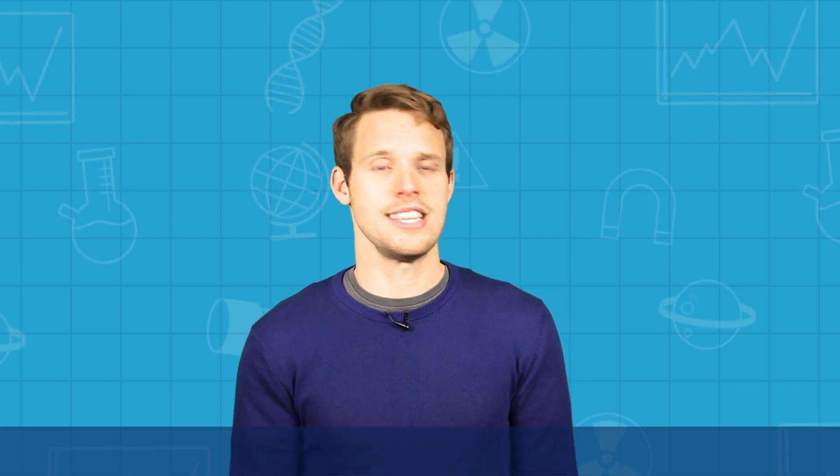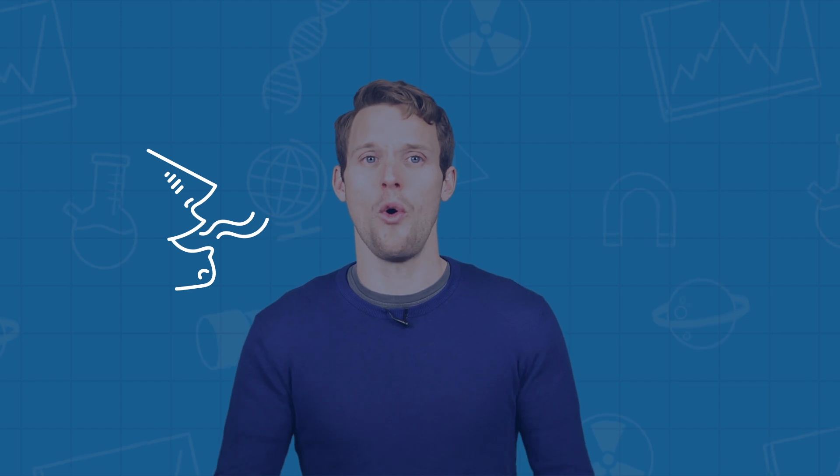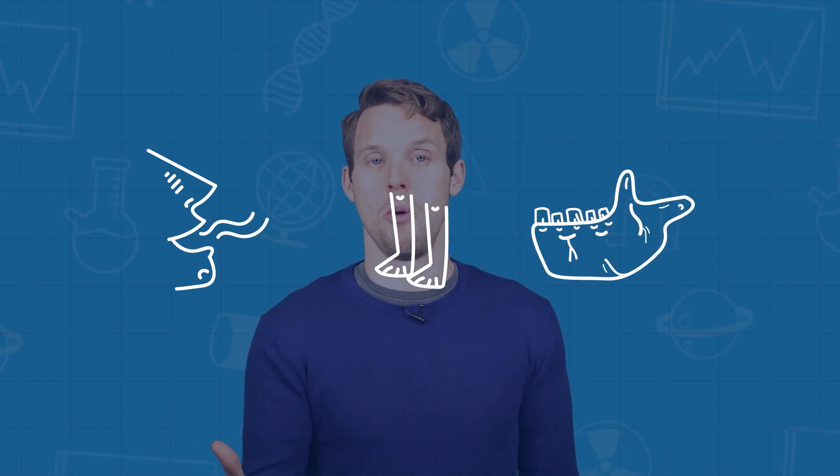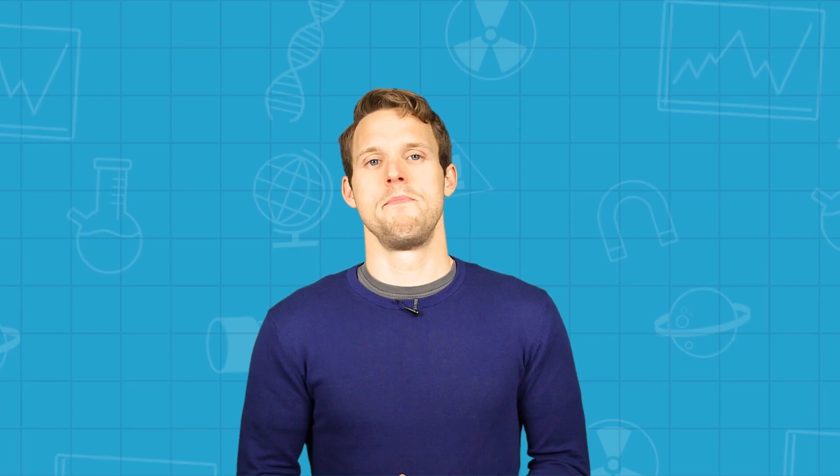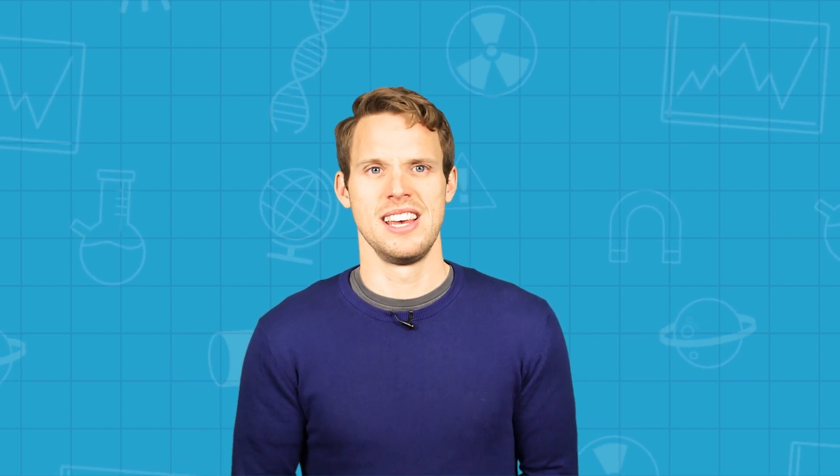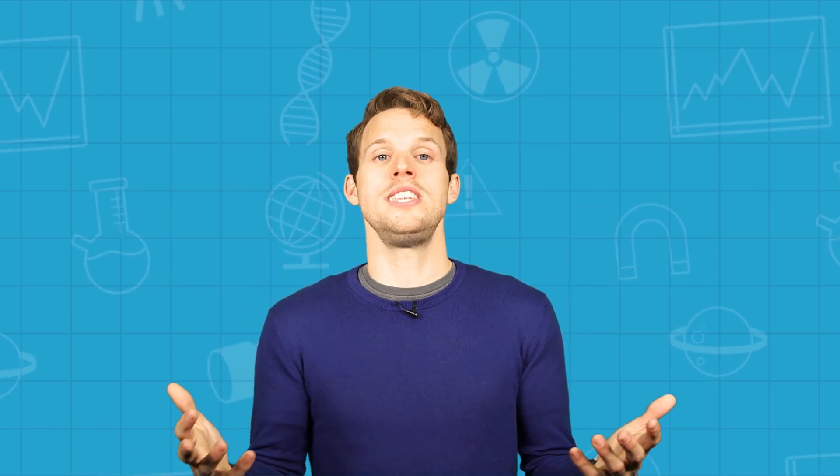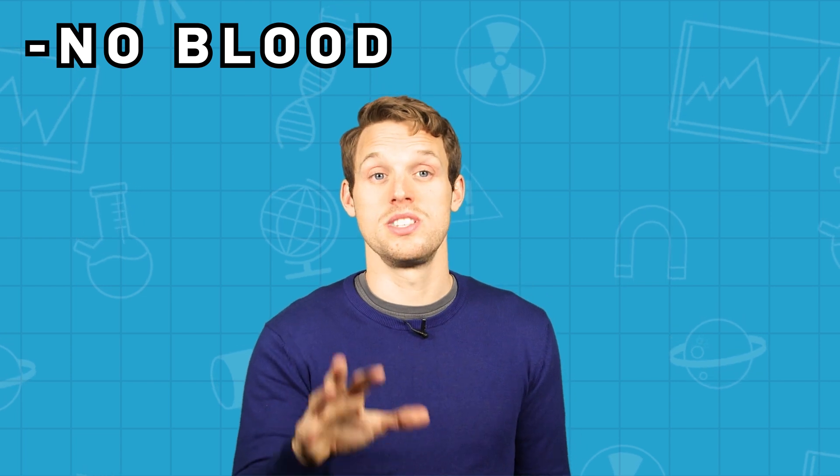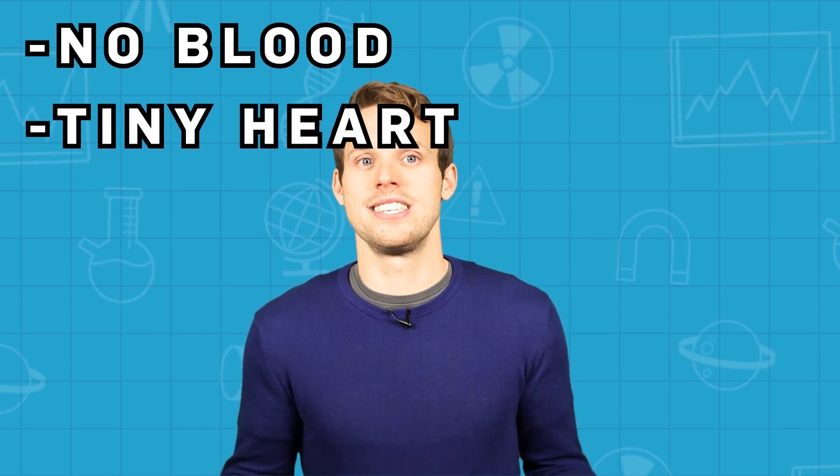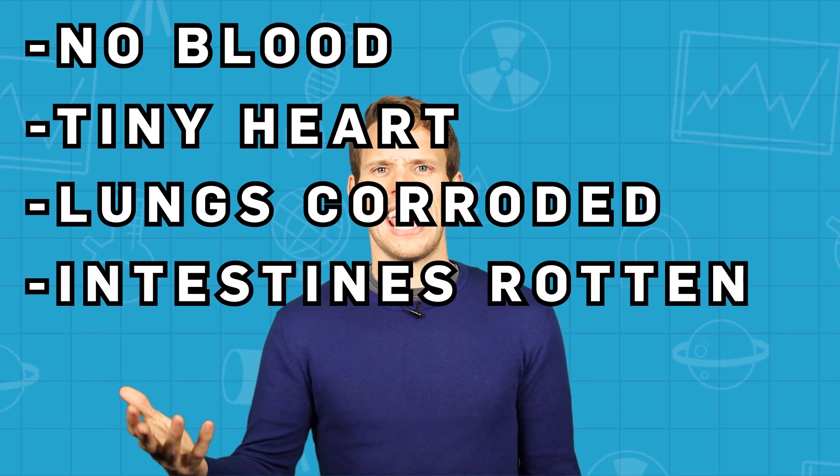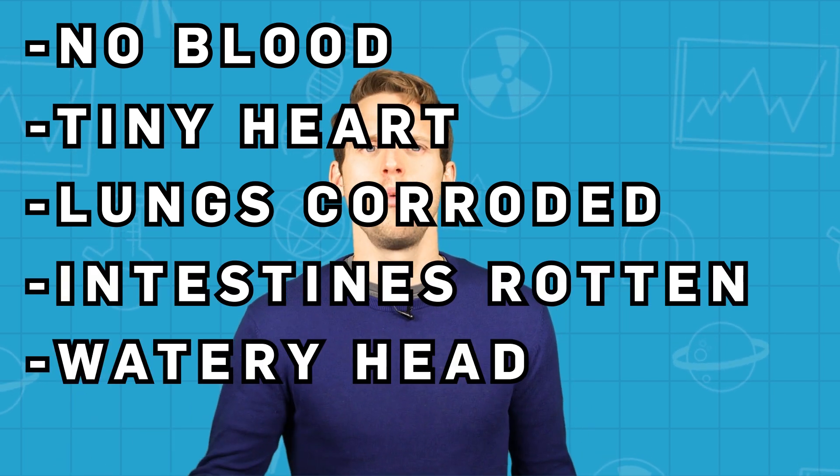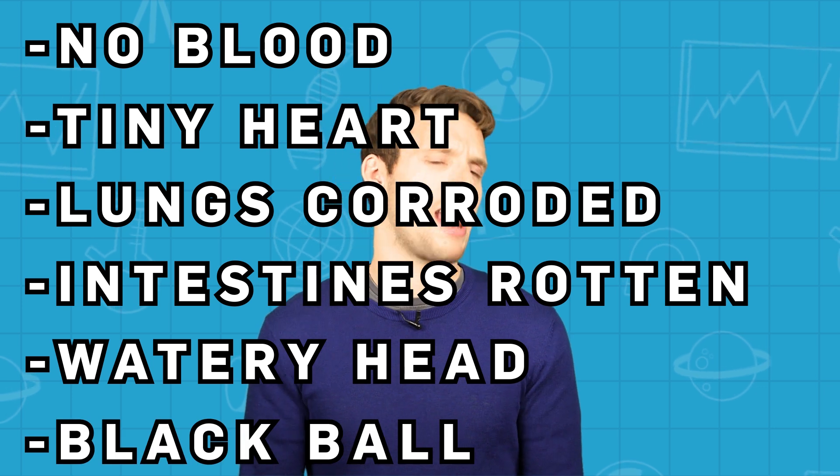Charles II suffered from numerous disabilities and congenital abnormalities. He didn't speak until he was four, walk until he was eight and his deformed jaw meant he could barely chew. In his later life, insanity set in and at one point he demanded that the bodies of his family be exhumed so he could look upon their corpses. When he finally died, at the young age of 38, his autopsies stated that his body did not contain a drop of blood, his heart was the size of a peppercorn, his lungs corroded, his intestines rotten and gangrenous, his head full of water. Oh, and he had a single testicle that was as black as coal.